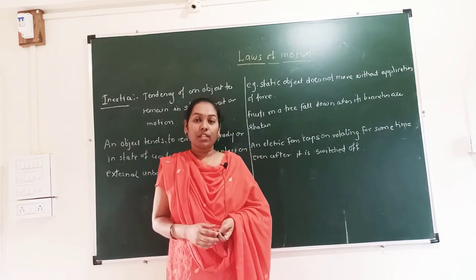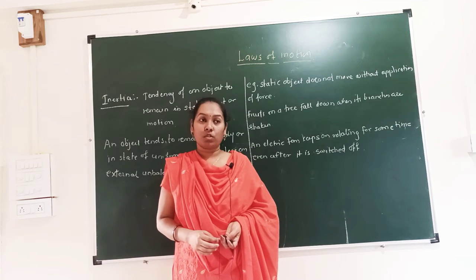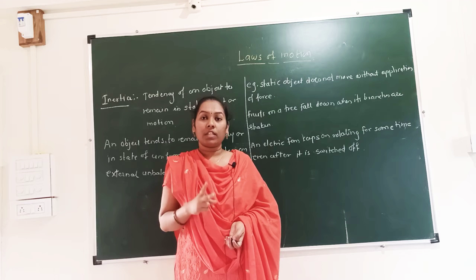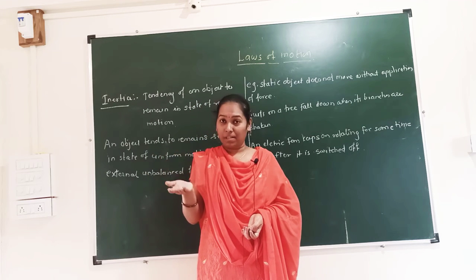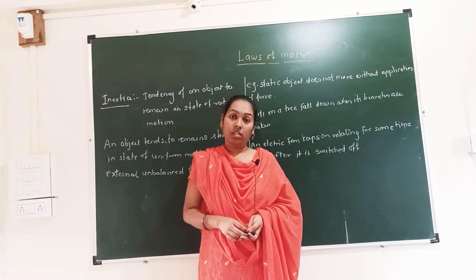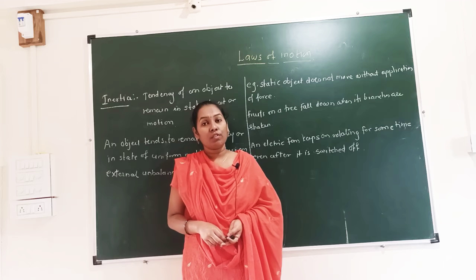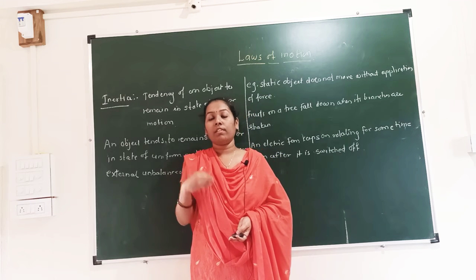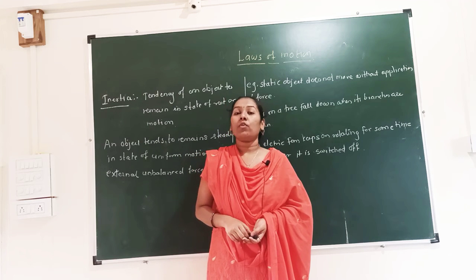Hello students, good morning. In the previous video we have seen information about uniform circular motion. We are learning the topic 'Laws of Motion.' Uniform circular motion has two key words: uniform and circular. When an object moves with uniform velocity along a circular path, that is known as uniform circular motion.